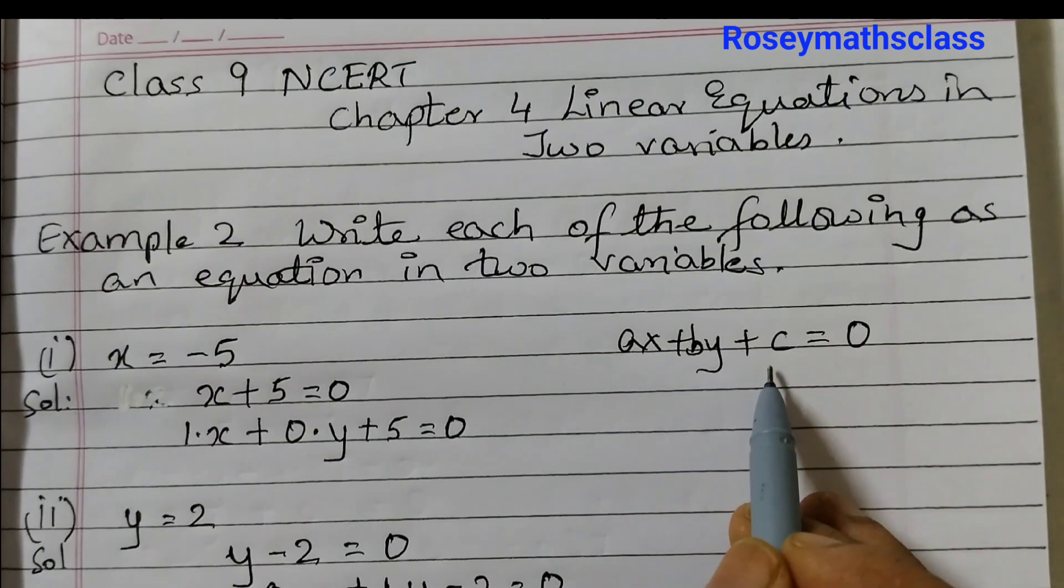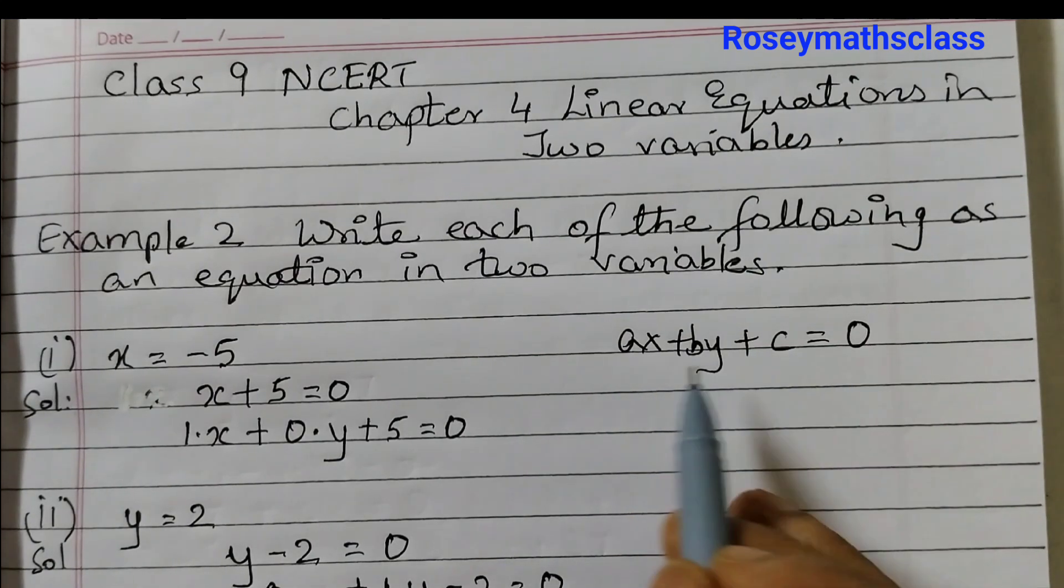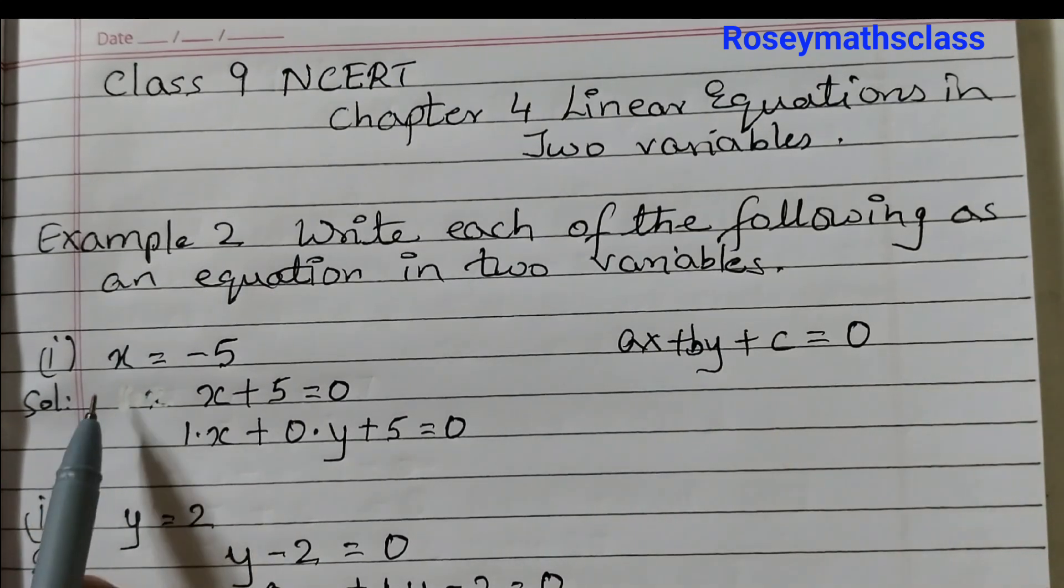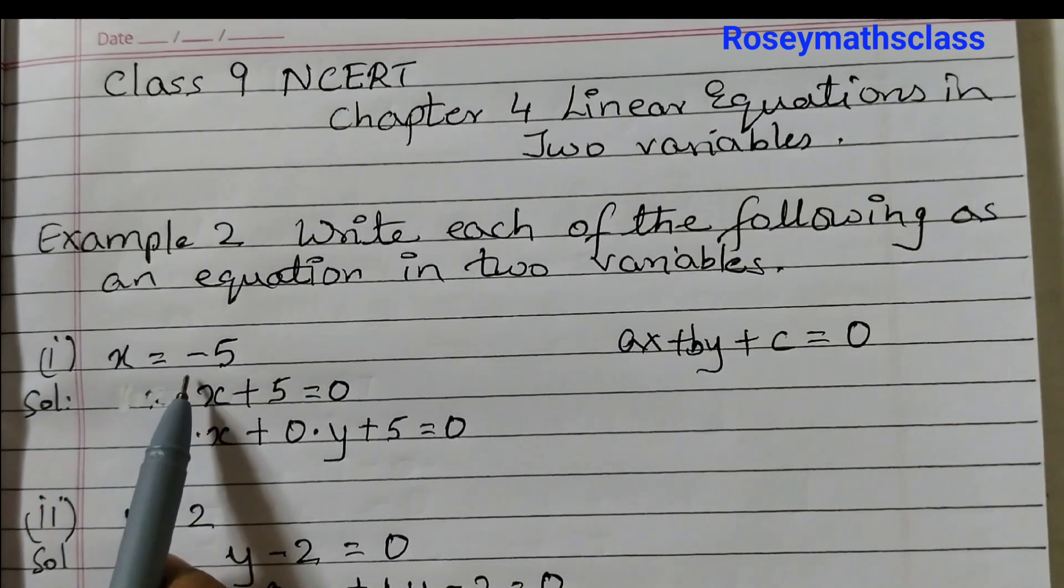ax plus by plus c is equal to 0 where x and y are the variables. The first one is x is equal to minus 5.